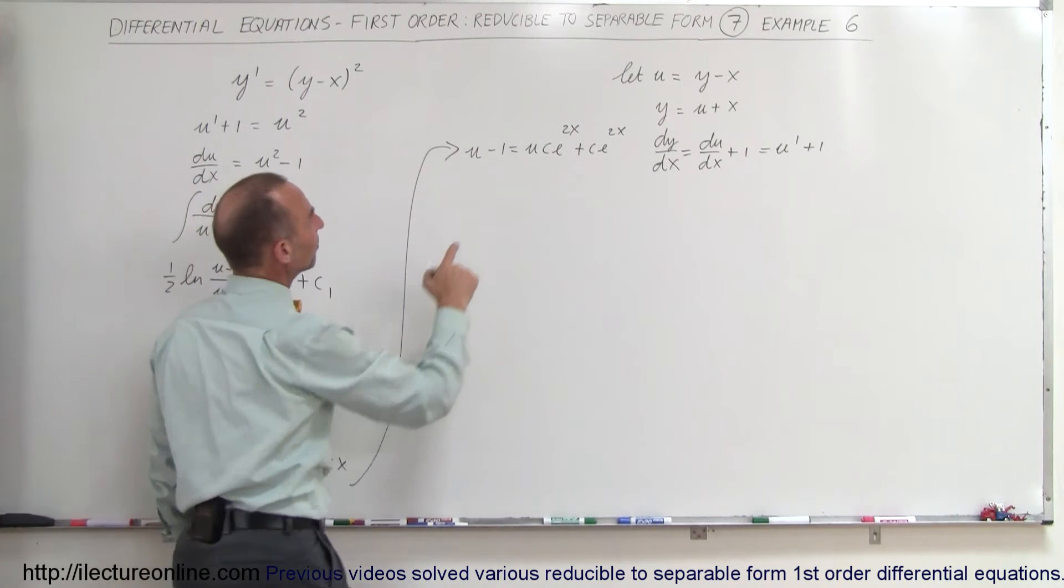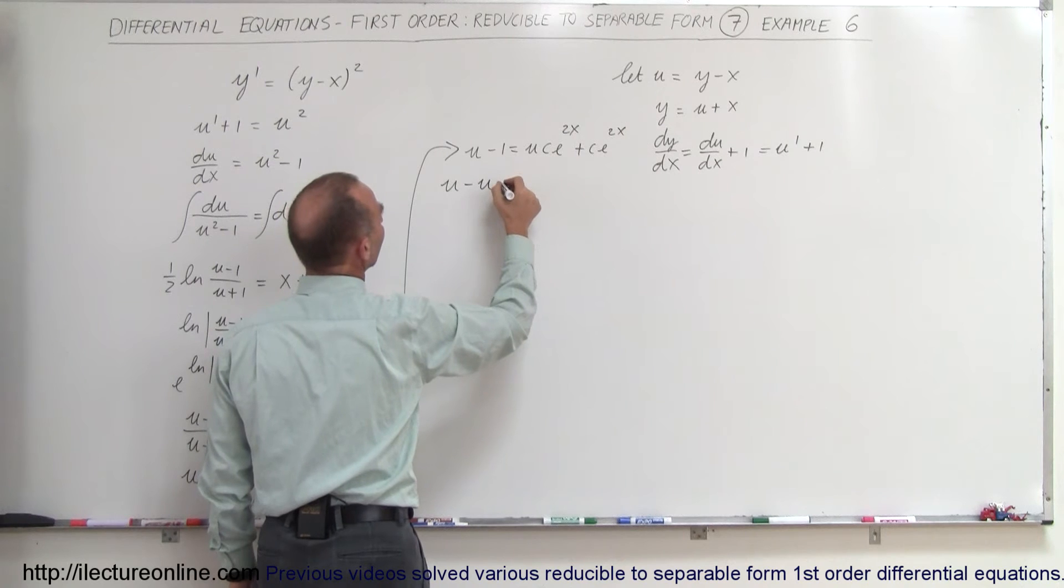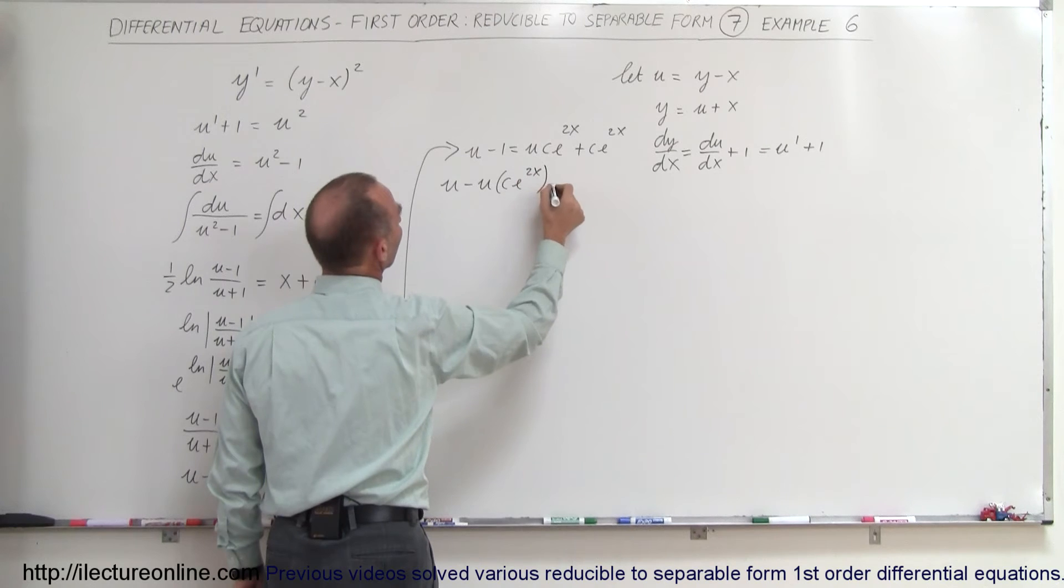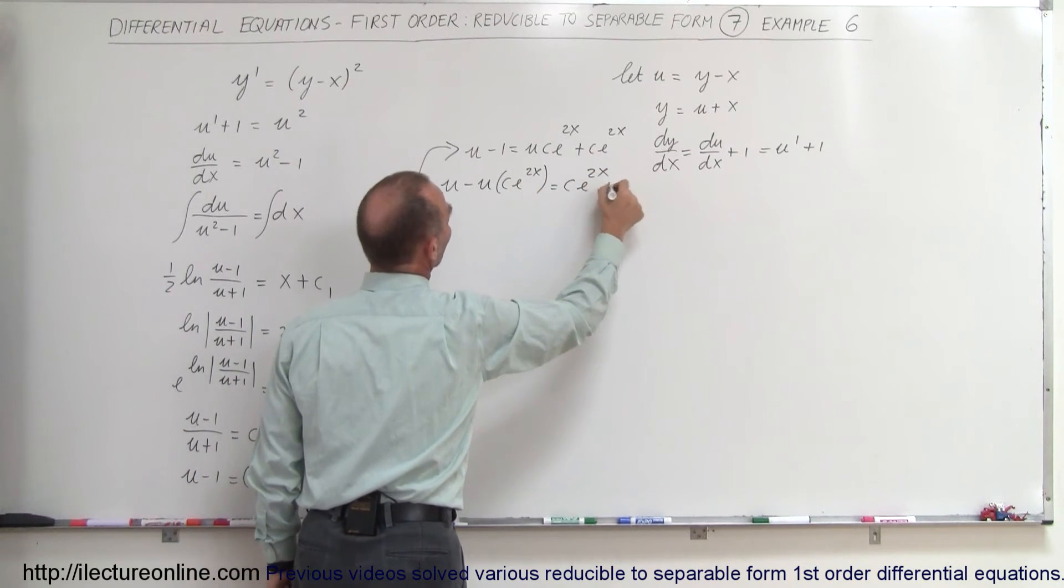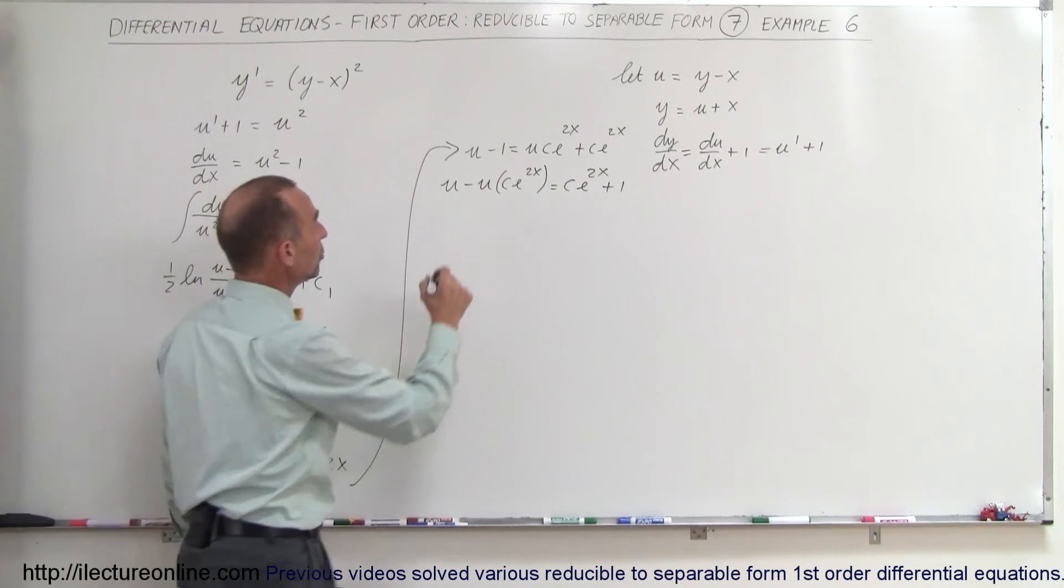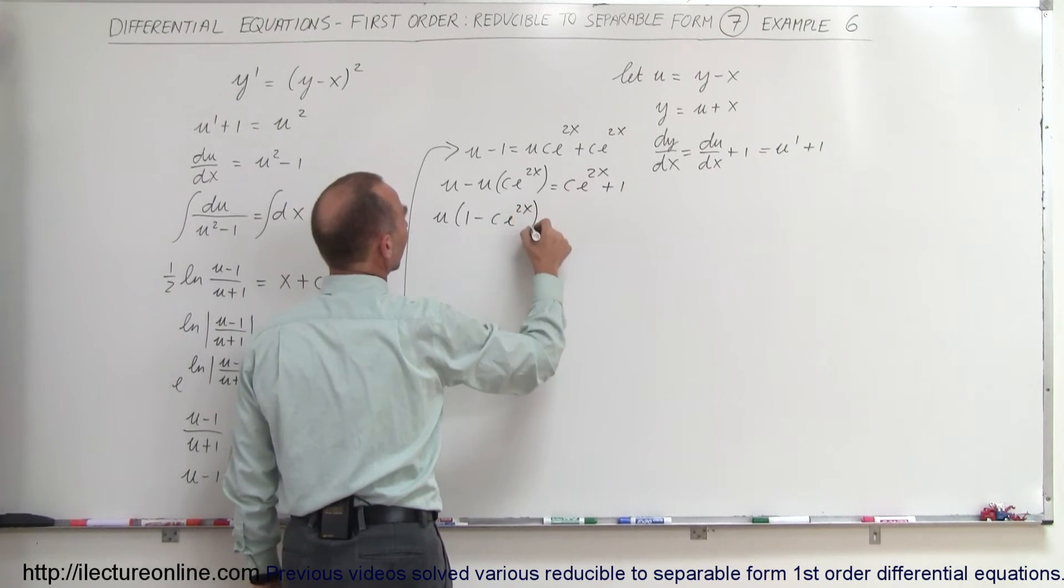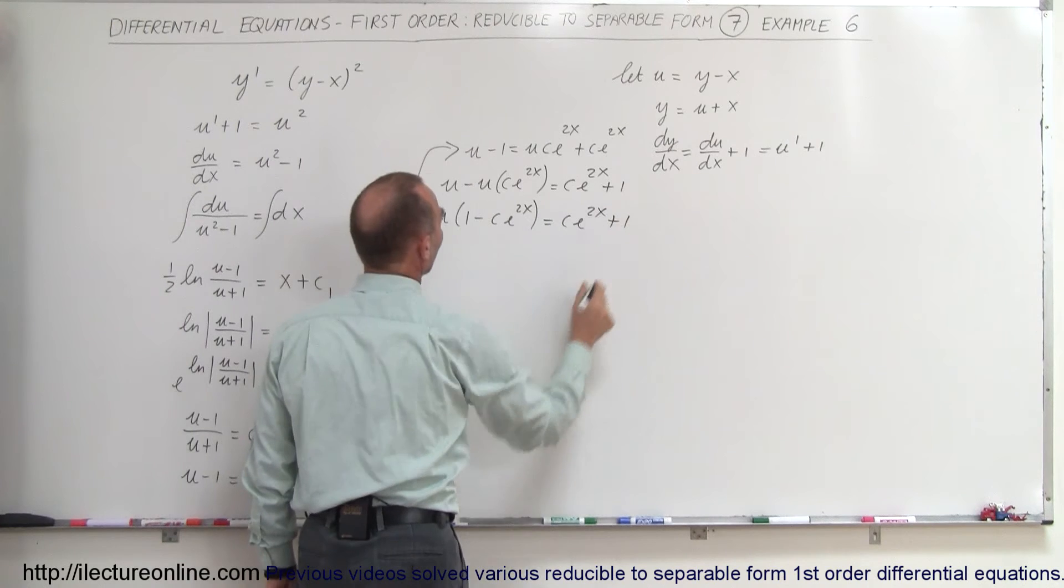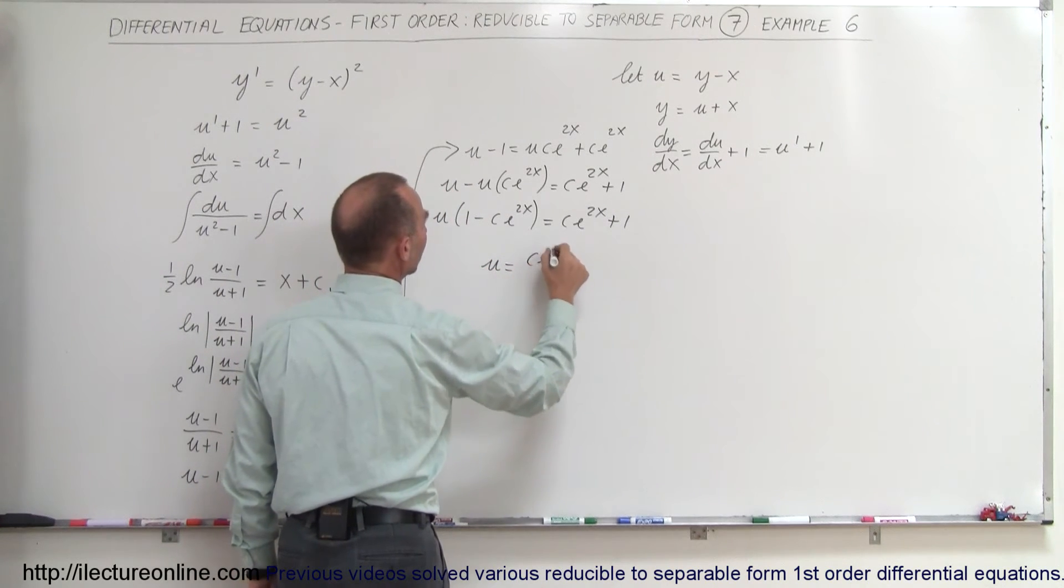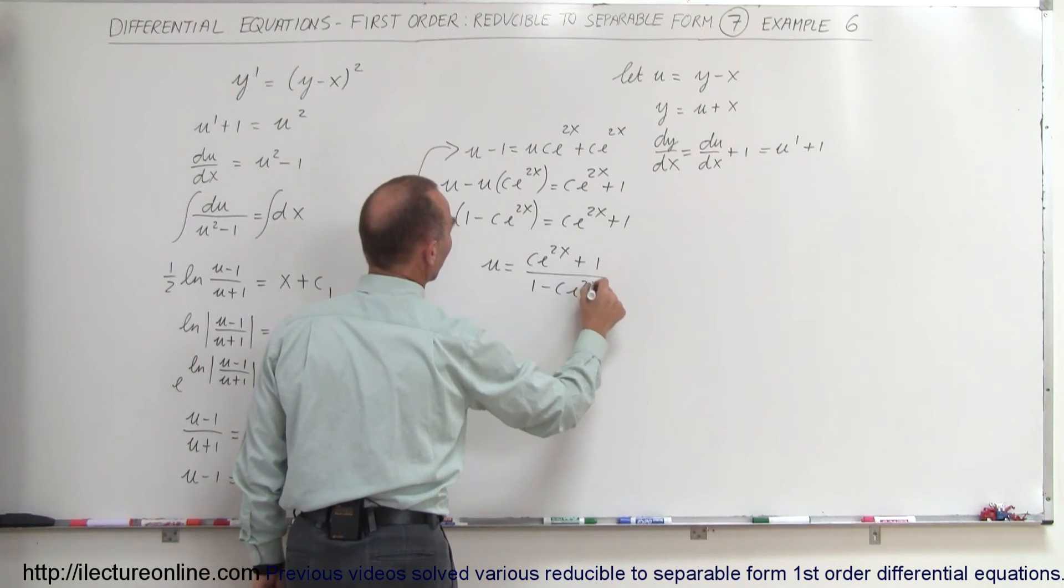Let's multiply this out. We end up with u minus 1 equals u times c e to the 2x plus c e to the 2x. We can write it as u minus u times c e to the 2x equals c e to the 2x plus 1. On the left side we can factor out u, so u times (1 minus c e to the 2x) equals c e to the 2x plus 1. Divide both sides, so u equals (c e to the 2x plus 1) divided by (1 minus c e to the 2x).